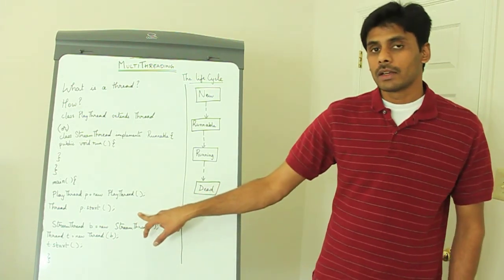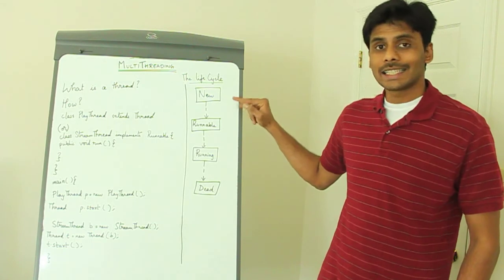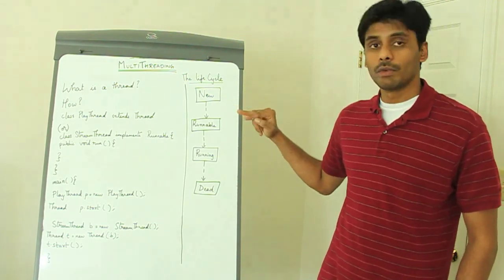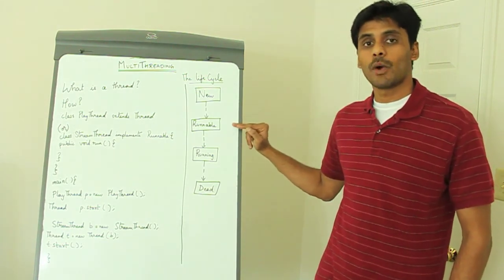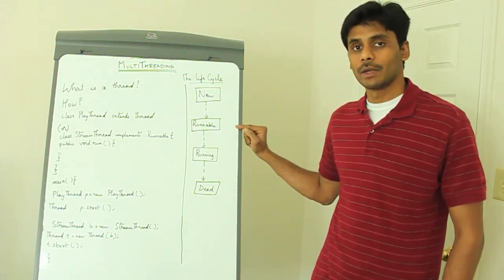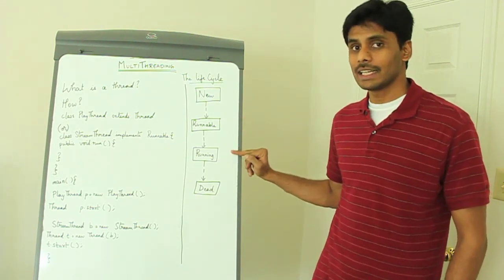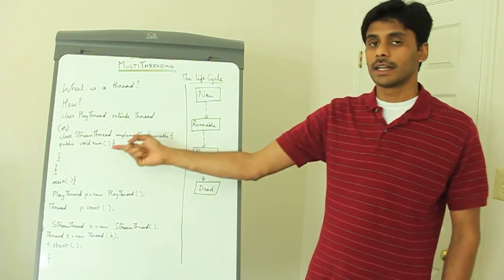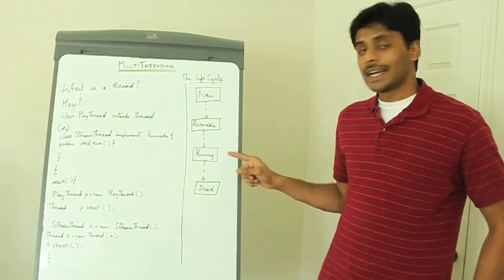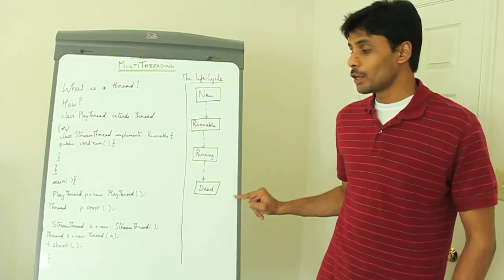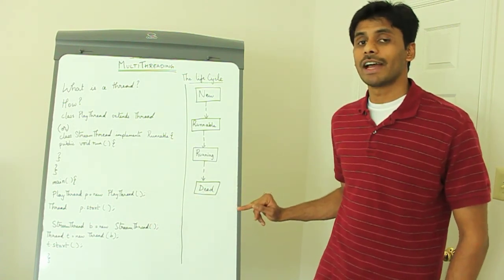When you invoke the start method, the thread moves to the runnable state. When you create an instance, the thread is in the new state. When you invoke start, the JVM moves it to the runnable state, and it is then up to the JVM thread scheduler to pick it up and move it to the running state. Once the run method completes and executes all the application code, the thread moves to the dead state. If you try to invoke the start method again on a dead thread, you will get an IllegalStateException.